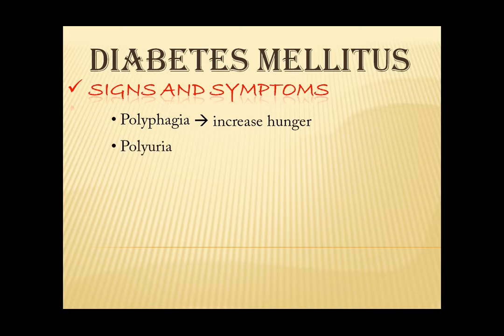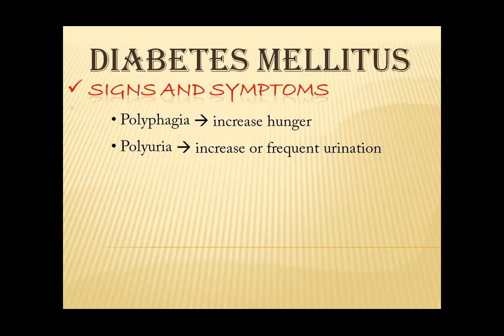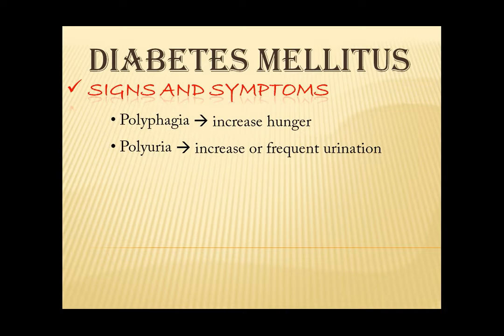Next, polyuria — it means there is an increase or frequent urination. This happens when there is an increased glucose in the blood or hyperglycemia that results to osmotic diuresis. The glucose level is high that it is excreted in the urine. Then the glucose pulls out the fluid from the cells which results to increased glomerular filtration rate that causes increased urine output. Next is polydipsia — it means there is an increased thirst. Since there is an increased urine output, cellular dehydration occurs.